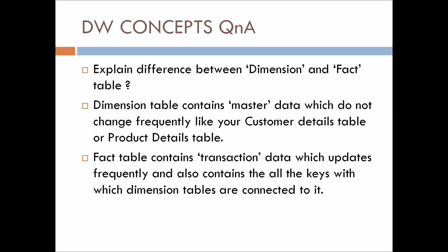The fact table contains transaction data which updates frequently, and it also contains all the keys with which the dimension tables are connected to it. So the fact table contains the columns through which your other dimension tables get connected to it.